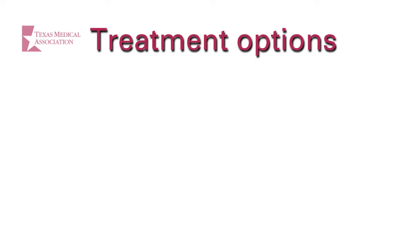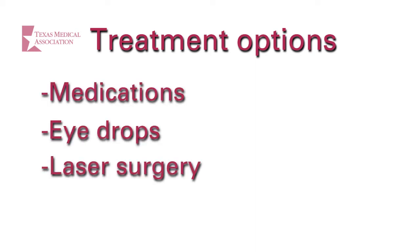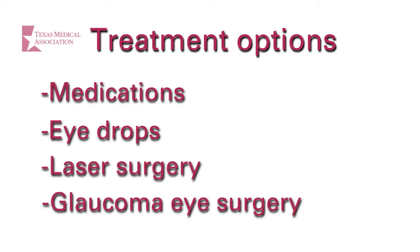Options to lower the pressure include medications, eye drops, laser surgery, and glaucoma eye surgery. Sometimes you will need a combination of these treatments depending on your stage of glaucoma. If your ophthalmologist prescribes eye drops, it is very important that you take them consistently as directed. Not using your drops properly in a consistent manner can result in poor control of your eye pressure and cause further vision loss.